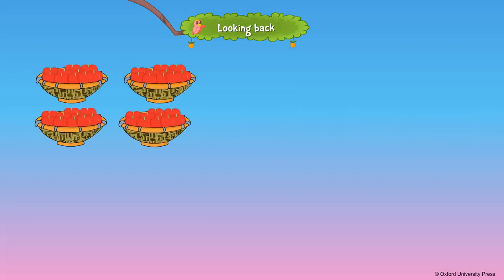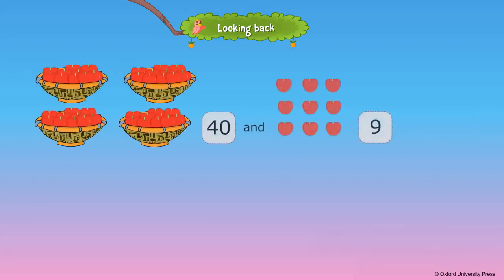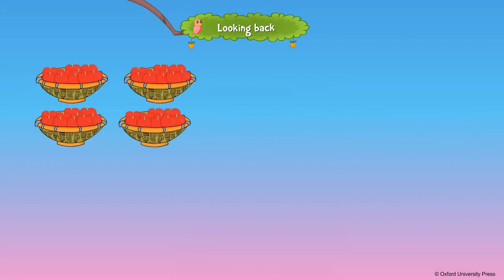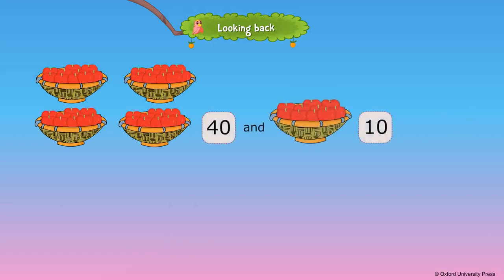If nine more apples are added, we will have 49 apples. 40 and 9 is 49. If 10 more apples are added, we will have 50 apples. 40 and 10 is 50.